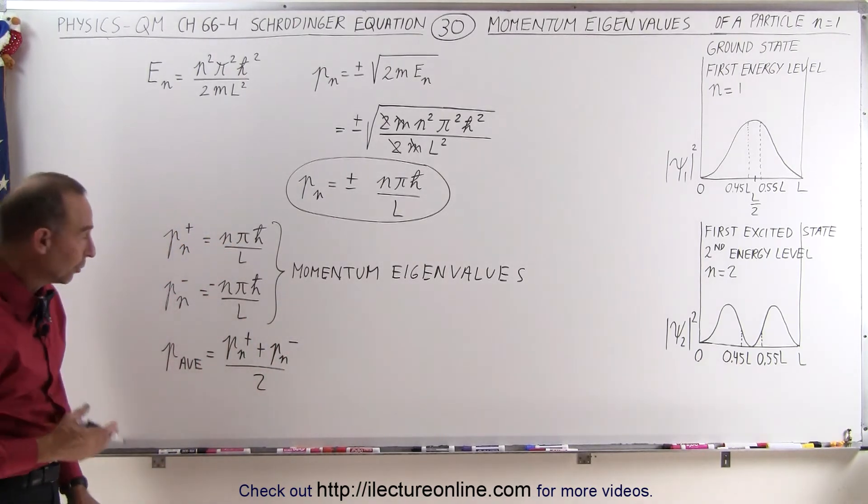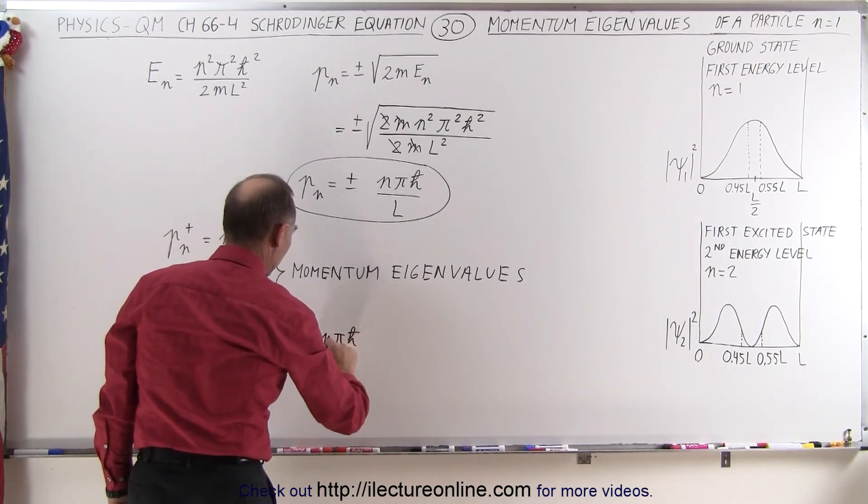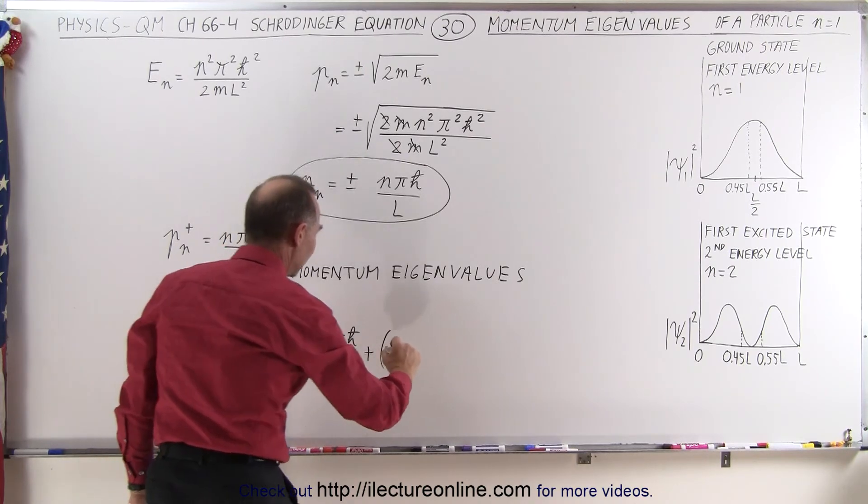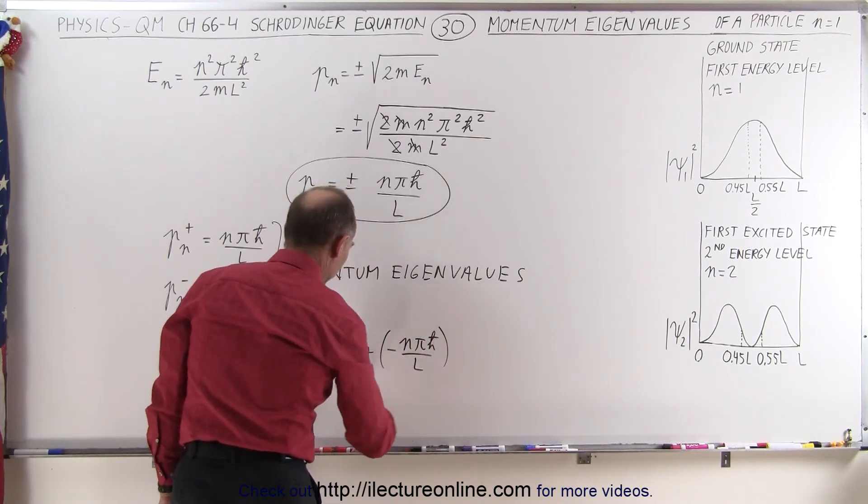So now all we have to do is add the two together and see what we get. So this is equal to n pi h-bar over l plus the negative n pi h-bar over l, the whole thing divided by 2.